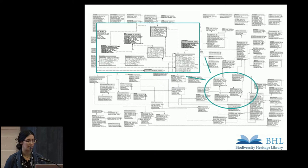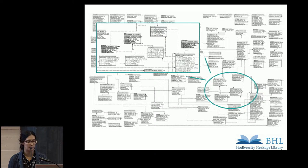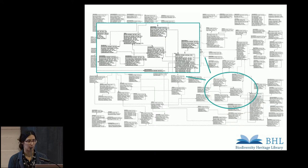Scientific names are important because names are what can be used as an index point in connecting different types of biodiversity data, including literature, observational data, images and videos, genetic data, and taxonomic catalogs. The majority of biodiversity data does relate to scientific names, which makes it a great index point for getting between these different types of data.